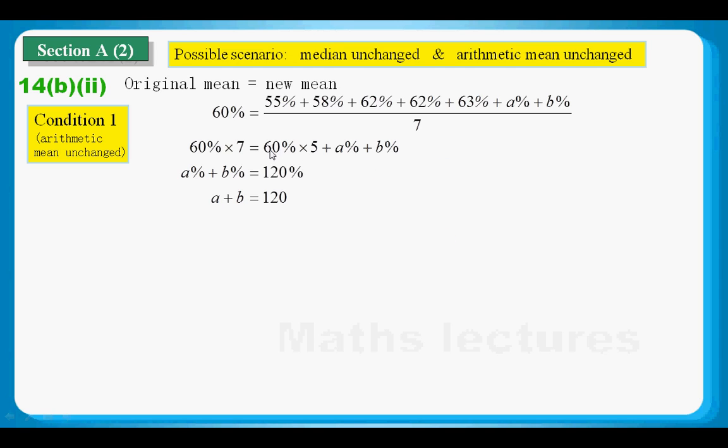And then you may say, wow, where does this 60 times 5 come from? Actually, this 60 times 5 is the data sum of the old data. If the old arithmetic mean is 60%, then the total of the old data would be 60% times 5, because in the old sets data, we have 5 data. And then after simplification, we have A plus B equals 120.